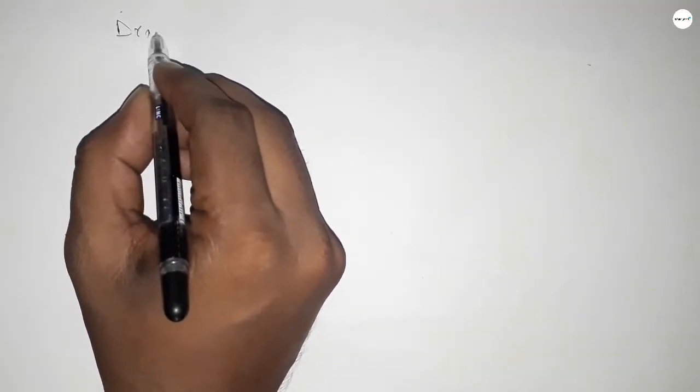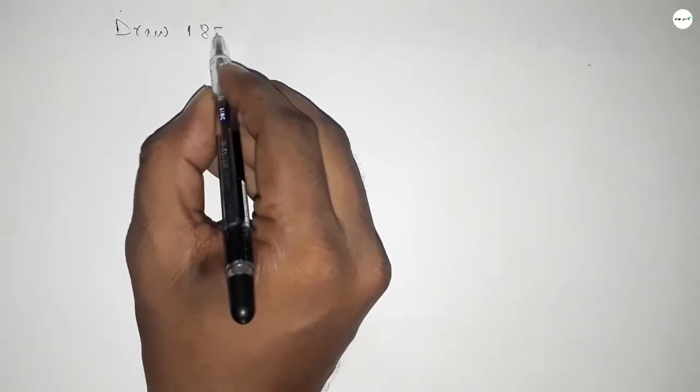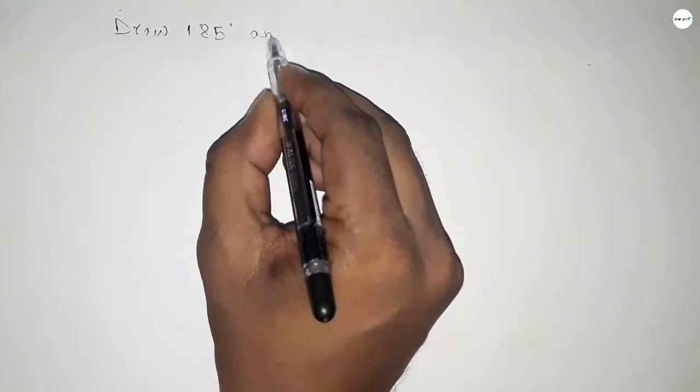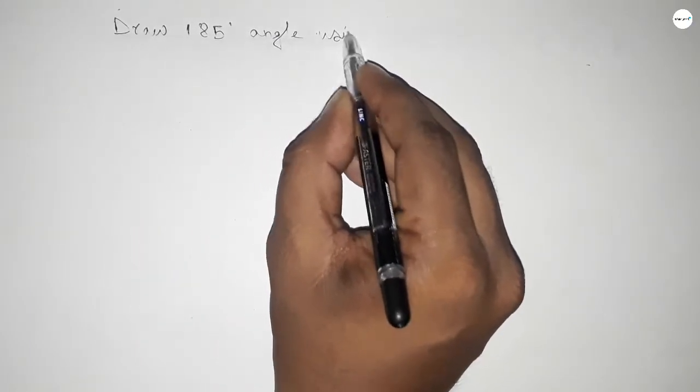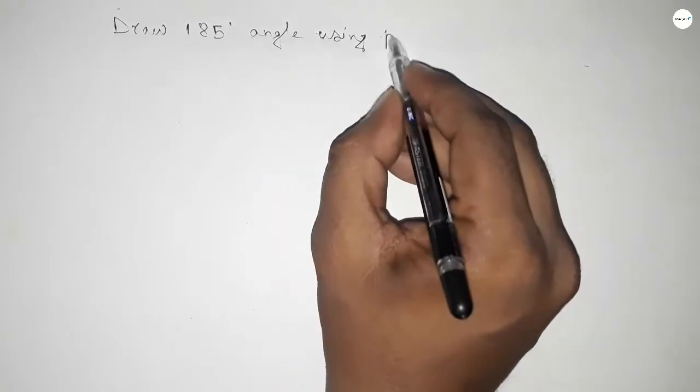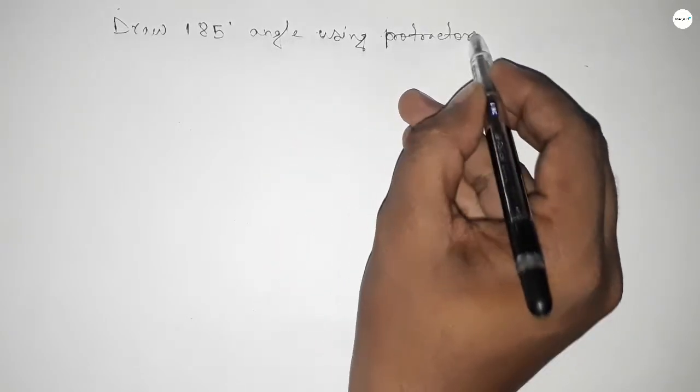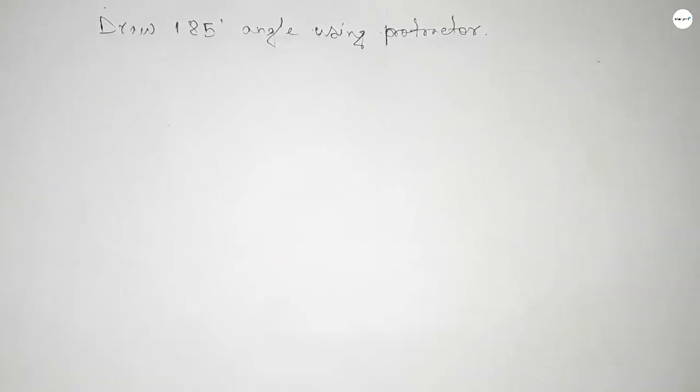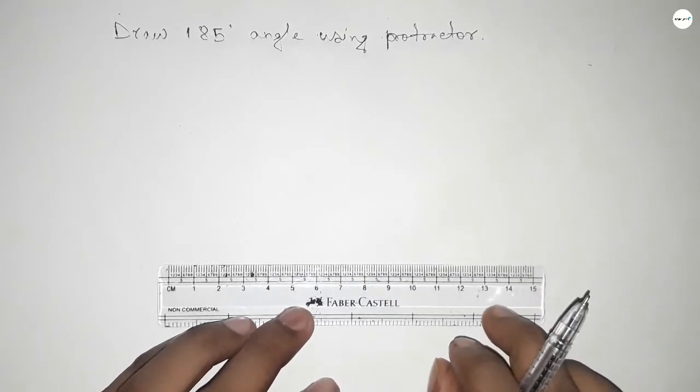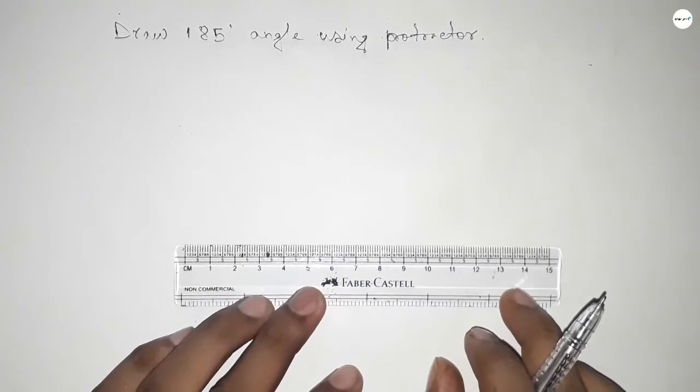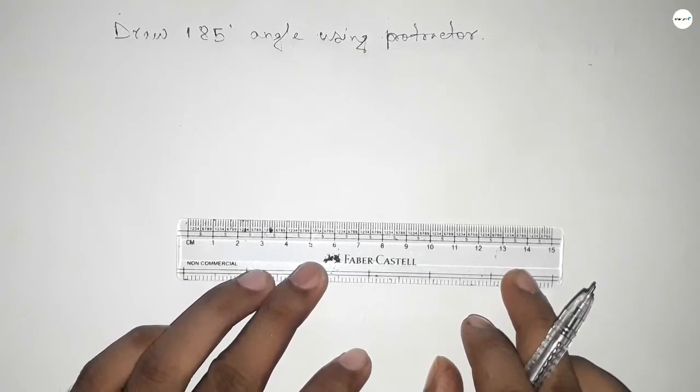Hi everyone, welcome to SSJR classes. Today in this video we have to draw 185 degree angle by using protractor. So let's start the video. First of all we have to draw a line of any length here.